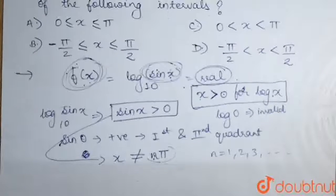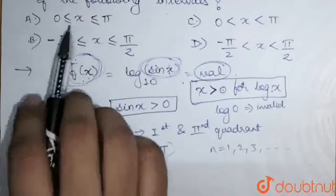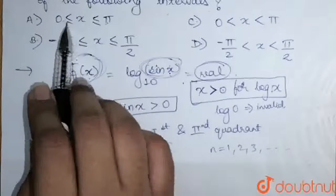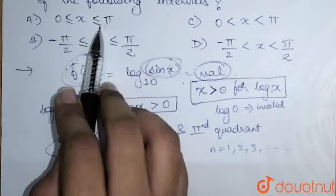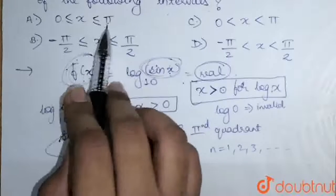Now, looking at our options, we can see that 0 to π, here, equal to sign is there. So this option is not valid because sin x will definitely become 0 on 0 and π.